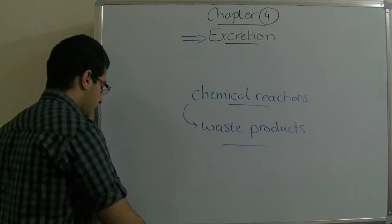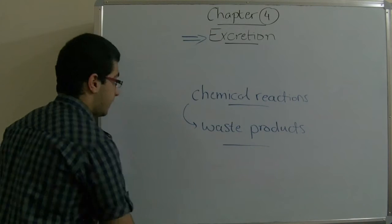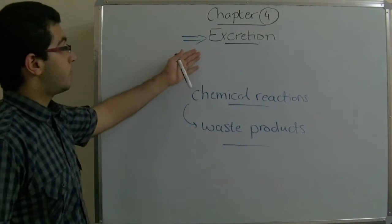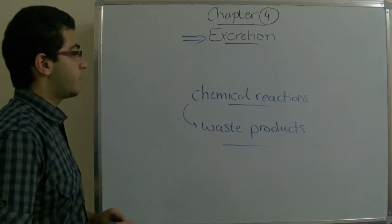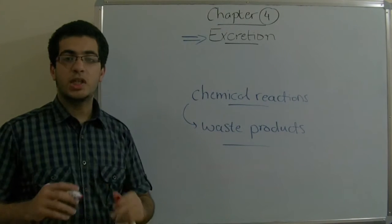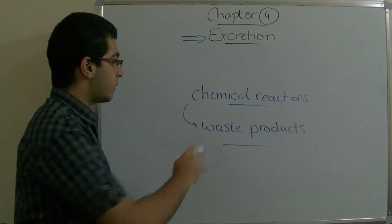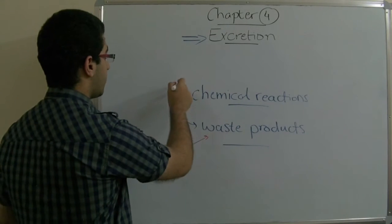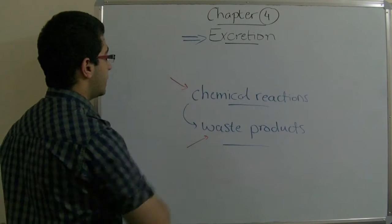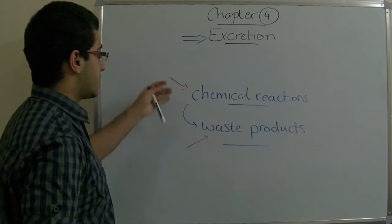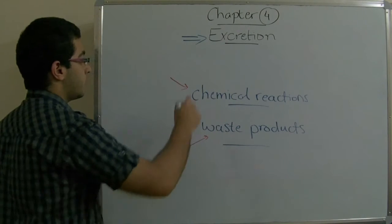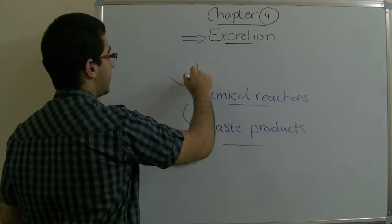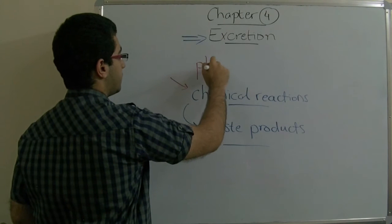From this we can conclude that the excretion process is the process in which every waste product resulting from a chemical reaction leaves the cell of a human body through the plasma membrane.